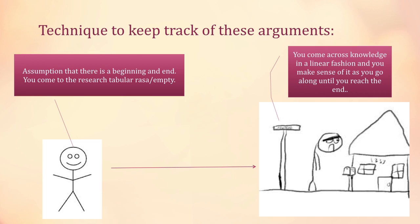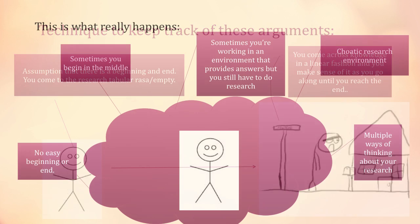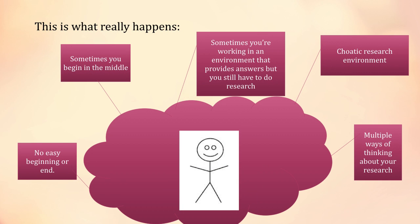There's an assumption that when you come to a research project you know nothing—you are a tabula rasa—and that you start at the beginning and work through an almost linear process toward the end, gathering knowledge until you know everything about the topic. What really happens is that you are often immersed in a very chaotic environment where there's no real beginning or ending. Sometimes you are working in the field in which you're conducting research, so you know a lot about the area already and almost have to go back and find a beginning.